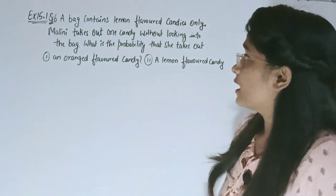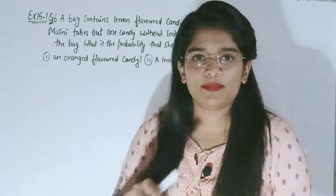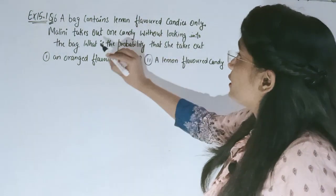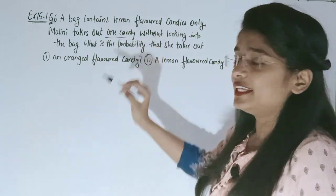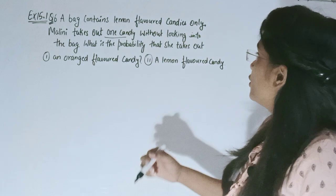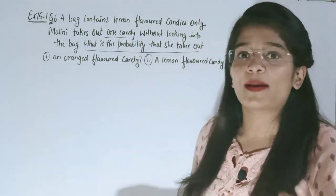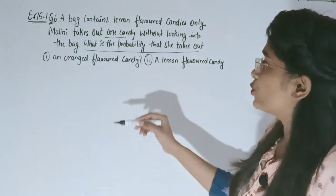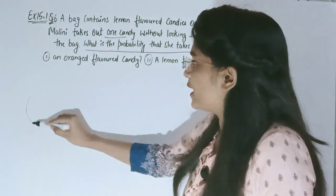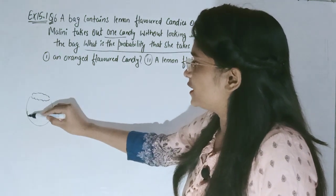Question number six: a bag contains lemon flavor candy. What is the probability that she takes out a candy that will be orange flavor? We have now seen that in one bag, all the candy are lemon flavor.